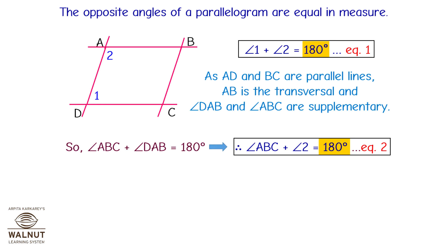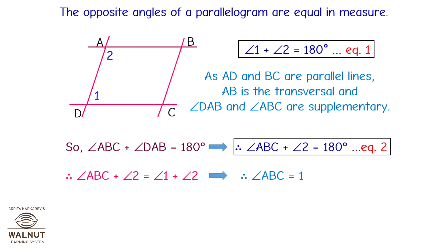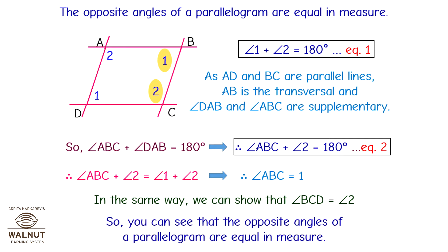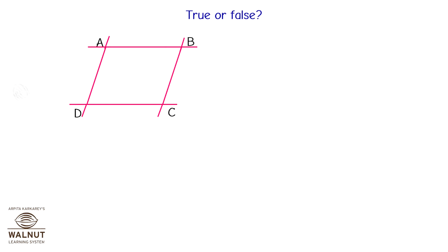Comparing the two equations, since the right-hand sides are both 180 degrees, we equate the left-hand sides: angle ABC plus angle 2 equals angle 1 plus angle 2. Cancelling angle 2 from both sides gives angle ABC equals angle 1. In the same way, we can show that angle BCD equals angle 2. This proves that the opposite angles of a parallelogram are equal in measure.